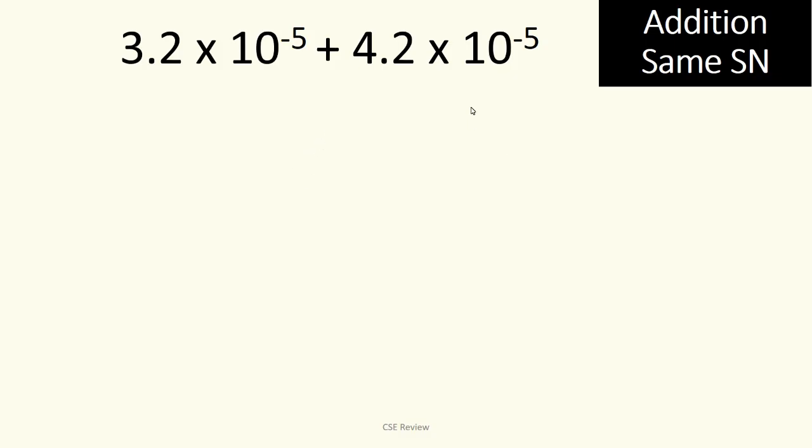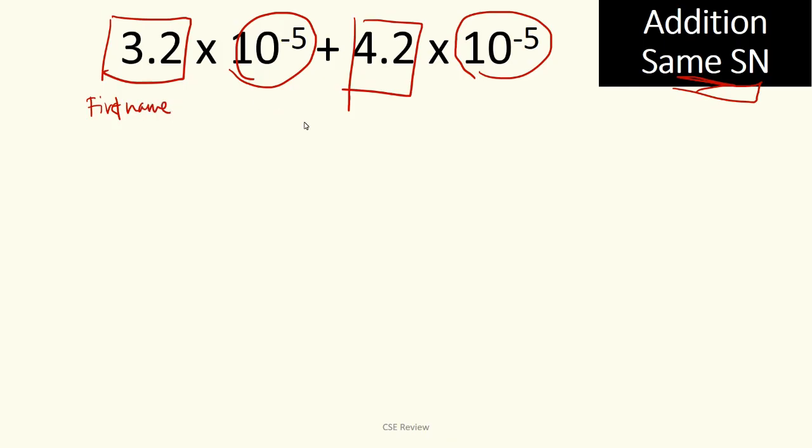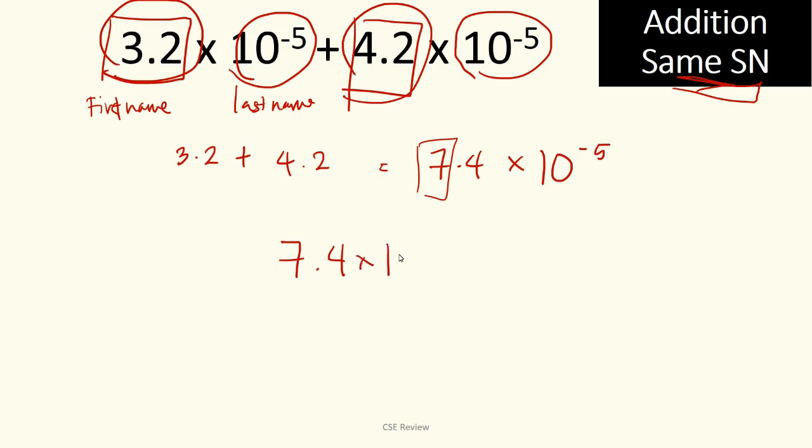Now, here's a sample problem. In this problem, same ang scientific notation. Ibig sabihin pareho silang 10 raised to 5. In this case, you just add the first part and then copy the last part. Again, going back to the concept of exponents or radicals, basically first name, last name. So 3.2 plus 4.2 is going to give us 7.4 and then copy the last name times 10 raised to negative 5.